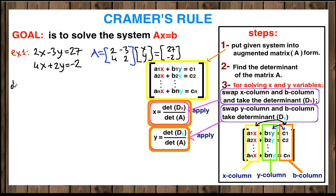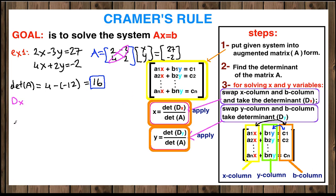After we set up the matrix, we need to find the determinant of matrix A. The determinant is given by the multiplication of the right diagonal minus the left diagonal. So 2 times 2 is 4, minus 4 times negative 3 which is negative 12. Four minus negative 12 is 16, so our determinant of A is 16. Now we need to find X and Y.